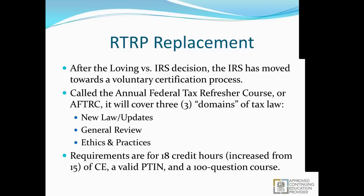The IRS has now moved toward an RTRP replacement. After the Loving versus IRS decision, they've moved toward a voluntary certification process — essentially the same thing but completely voluntary with no mandatory requirements. It will create what's called the Annual Federal Tax Refresher Course, or AFTRC, covering three domains: new laws and tax law updates, general review for things that stay the same each year, and a subsection for ethics and practices covered in Circular 230. This is almost identical to the Special Enrollment Examination that enrolled agents take, only without the extra business-side focus — primarily for individual returns.